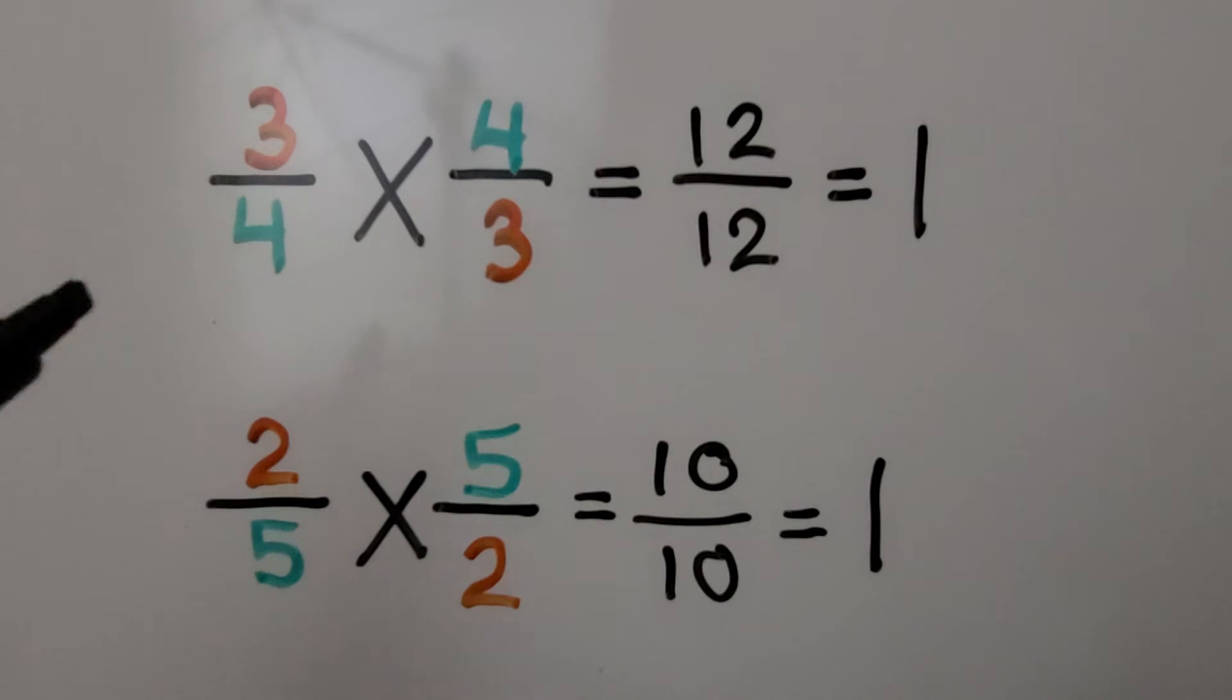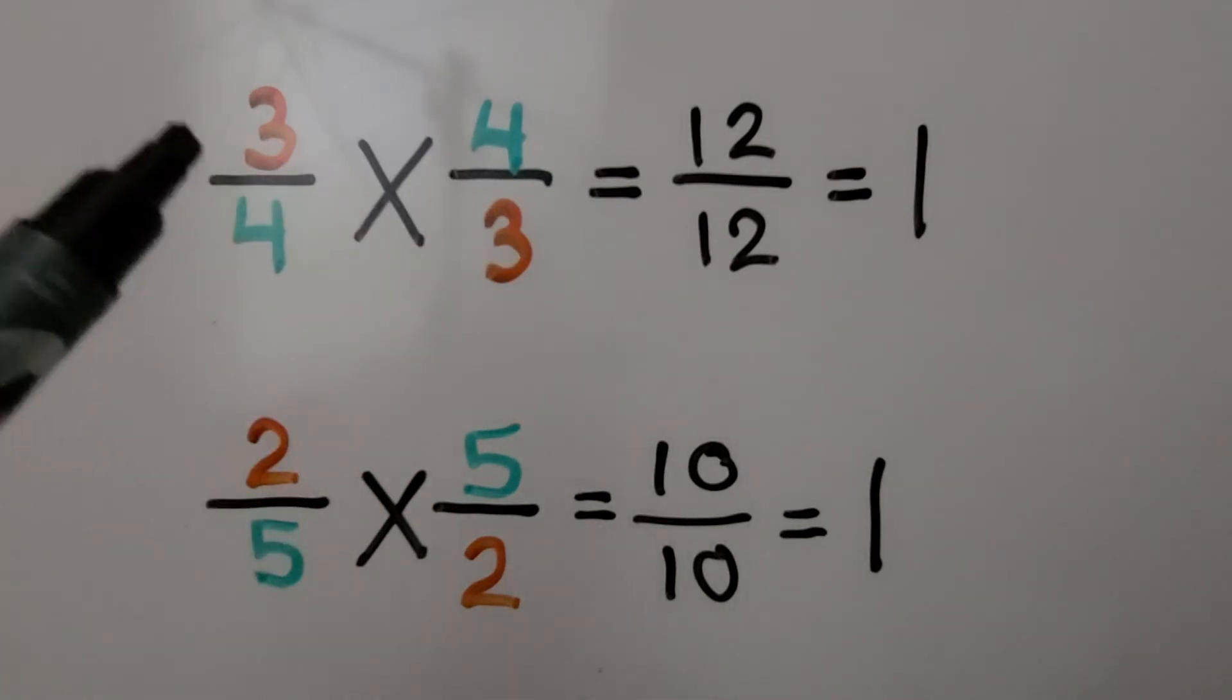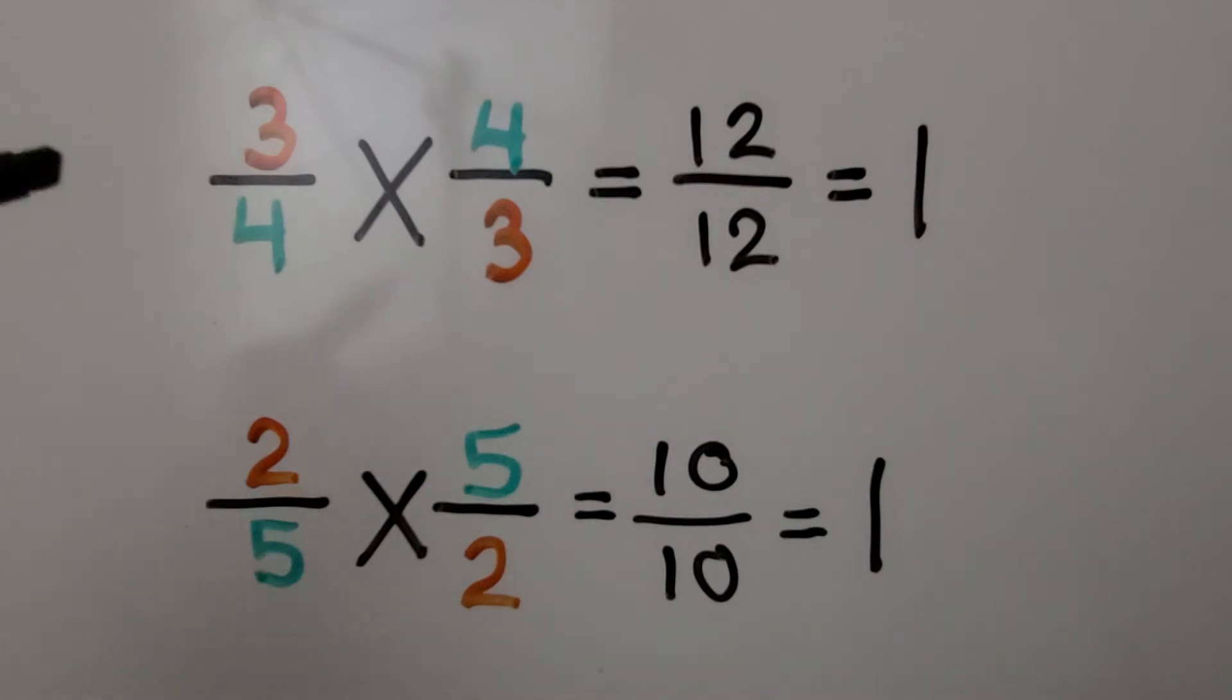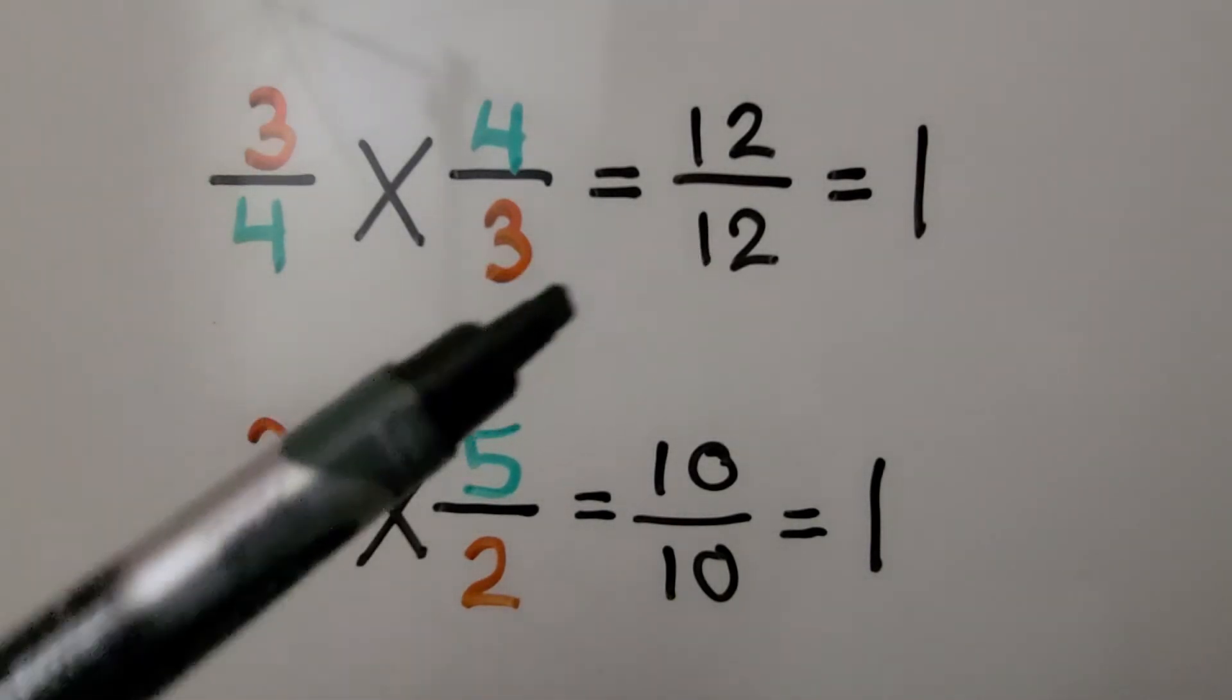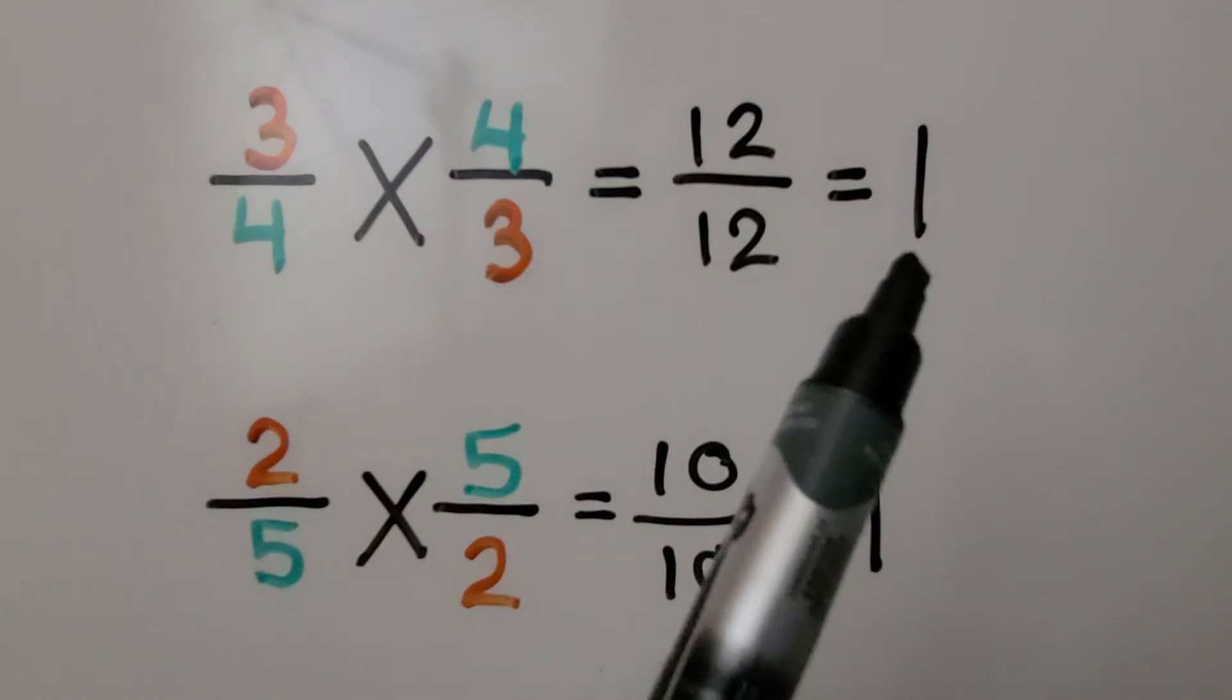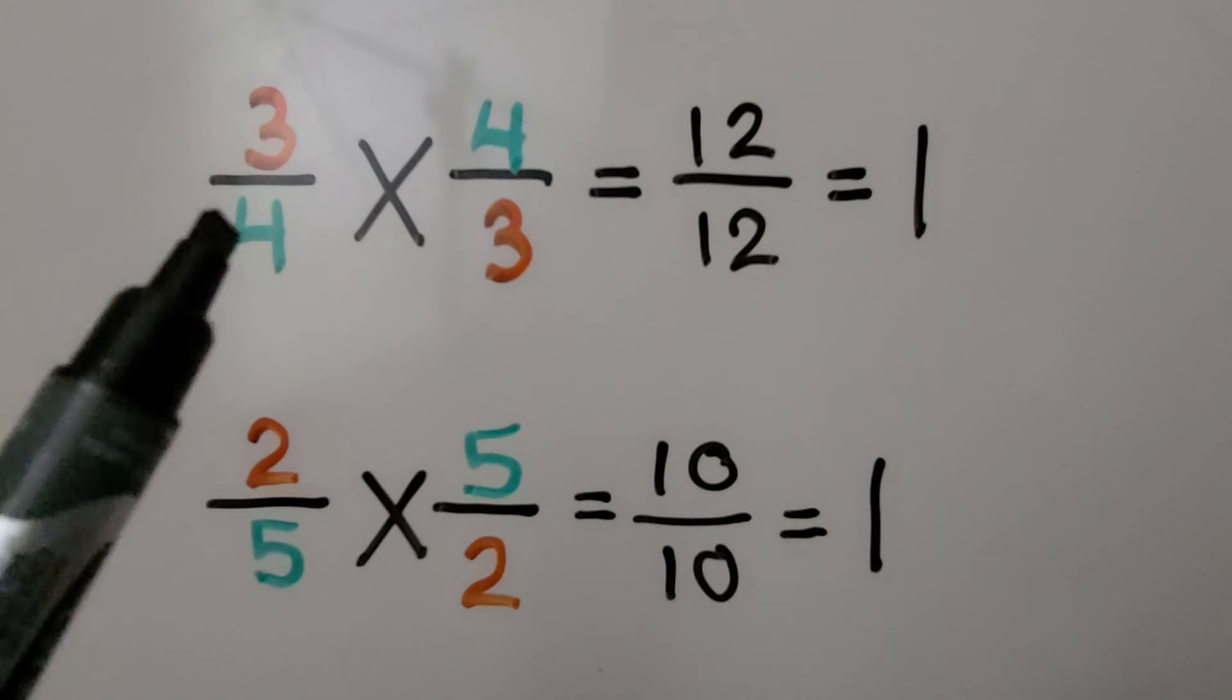Here we have 3/4. If we flip it upside-down, we have 4/3, which is the reciprocal of 3/4. When we multiply them straight across, we get 12/12. 12/12 is equal to 1 whole. We know that 4/3 is the reciprocal of 3/4.